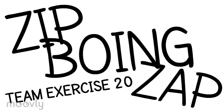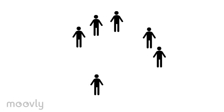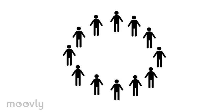Team Exercise 20: Zip-Zap-Boing. In this exercise the team will form a circle at equal distances from each other. The team will pass a zip to each other. Explain to the team they can pass on the zip by looking at someone in the circle, stretching their arms in the same direction and loudly saying zip.